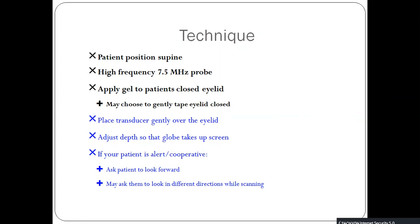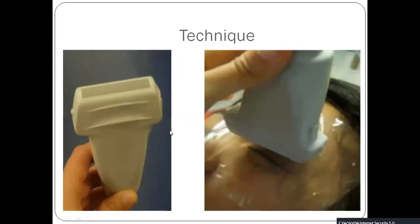If the patient is alert, communicative, or cooperative, you can ask the patient to look forward. You may also ask them to look in different directions while scanning. This is the linear or high frequency probe — you directly ask the patient to close the eyelid and then apply the ultrasound probe over the eyelid lightly.